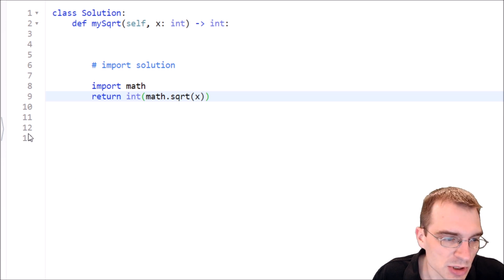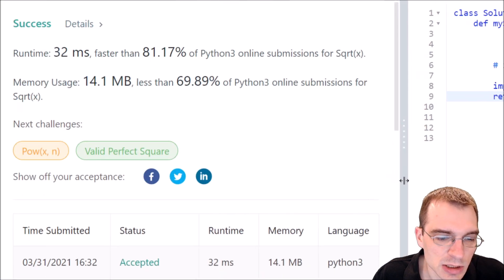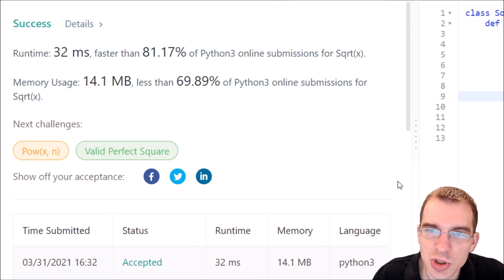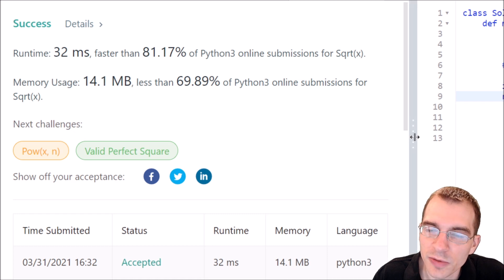Let's pull over and see the result of what that is. We can see just even with that basic submission, the runtime was 32 milliseconds faster than 81% of other Python 3 submissions. Now in reality, I don't see why you would ever do anything more than this. If you want to do square root in Python, you should just use the square root function.